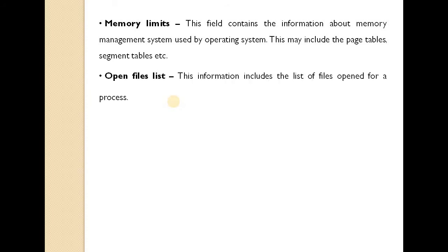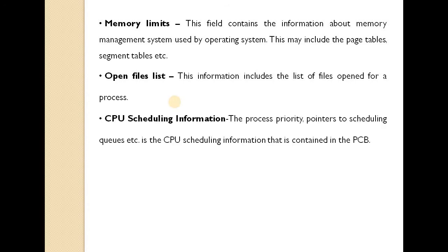Next is the open files list. This information includes the list of files opened by a process — how many files the process has used or is currently using. The next field is CPU scheduling information: the process priority, pointers to scheduling queues, etc. Every process is given a priority on which basis it will be executed, which will be discussed further in CPU scheduling.